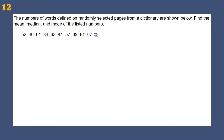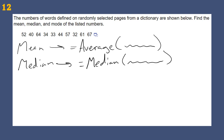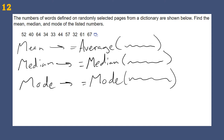Mean, median, and mode are three different things we can solve for. For mean in Excel, there's no 'mean' formula — we use =AVERAGE and put our numbers in. For median, the formula is =MEDIAN. For mode, the formula is =MODE. It might give us an error on mode if there is no mode — it'll probably say NA or error, because in this case all the values only happen once.